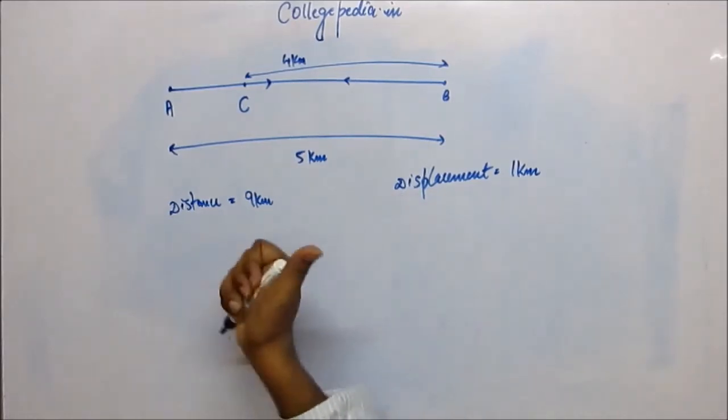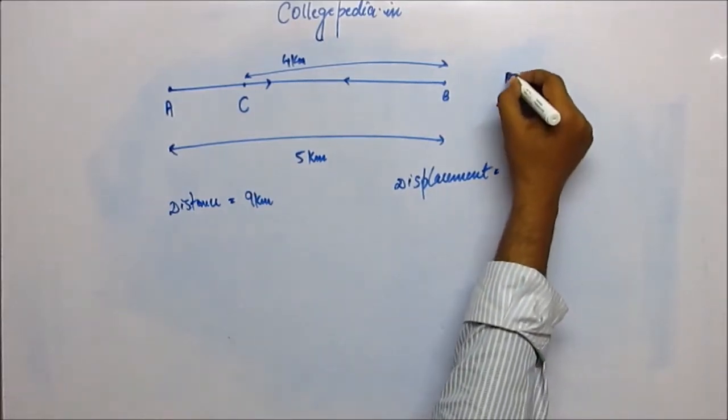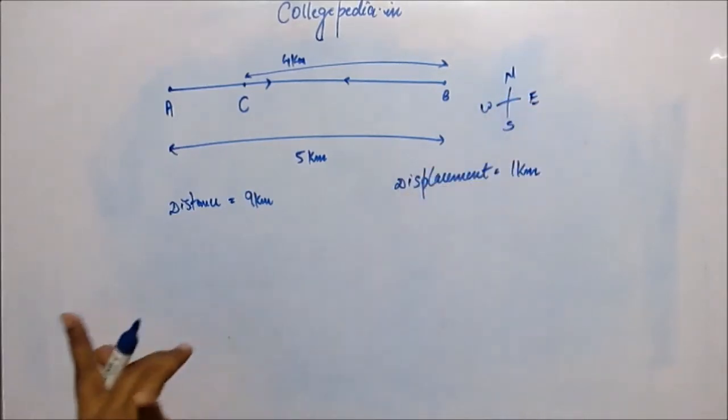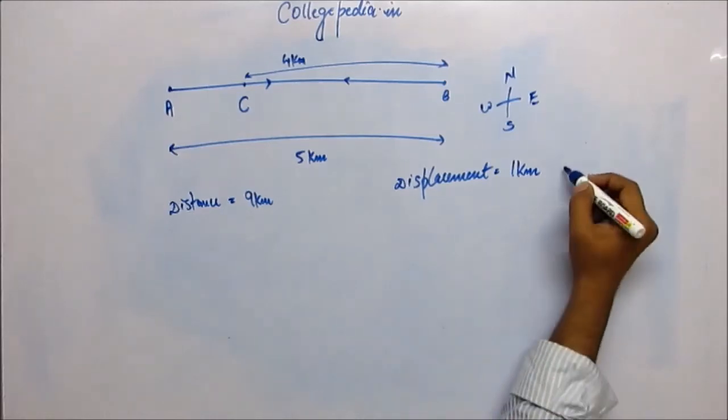Displacement has been towards east. If we follow this convention as north, south, east, and west, then point C is lying towards east of A. So we can say that displacement is 1 kilometer eastward.